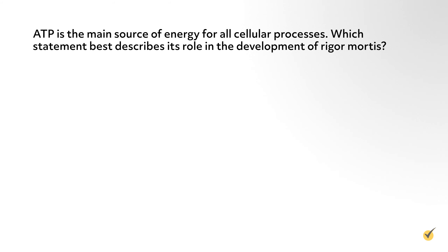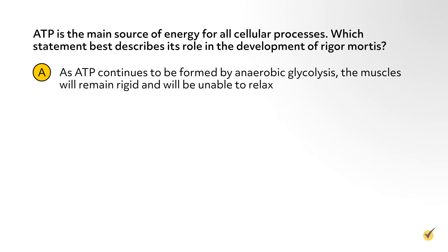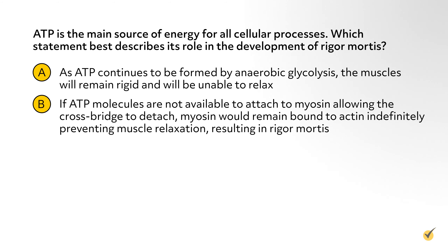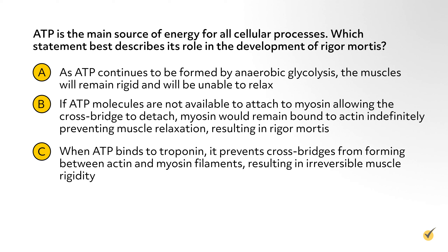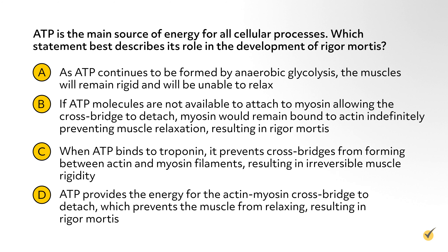Number three: ATP is the main source of energy for all cellular processes. Which statement best describes its role in the development of rigor mortis? A: as ATP continues to be formed by anaerobic glycolysis, the muscles will remain rigid and will be unable to relax. B: if ATP molecules are not available to attach to myosin, allowing the crossbridge to detach, myosin would remain bound to actin indefinitely, preventing muscle relaxation, resulting in rigor mortis. C: when ATP binds to troponin, it prevents crossbridges from forming between actin and myosin filaments, resulting in irreversible muscle rigidity. Or D: ATP provides the energy for the actin-myosin crossbridge to detach, which prevents the muscle from relaxing, resulting in rigor mortis. The correct answer is B.